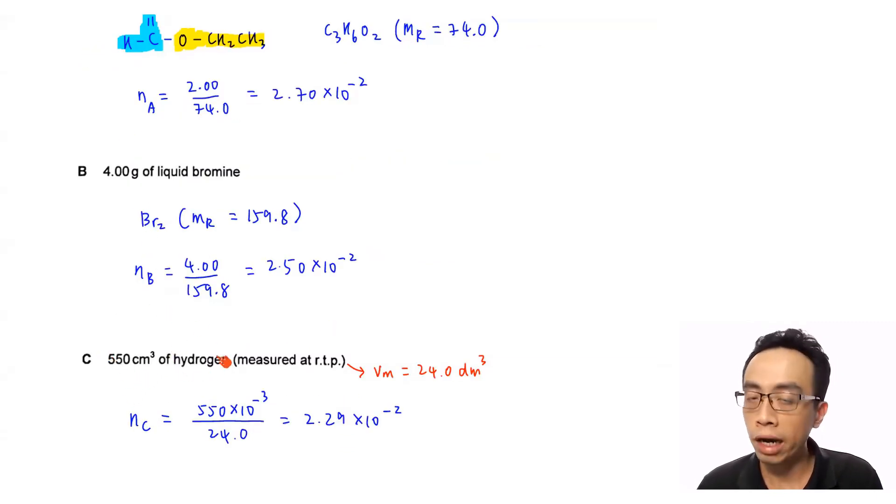Next, option C, 550 cm³ of hydrogen measured at RTP. Now, we do know that the molar volume is 24.0 dm³. Molar volume is the volume of 1 mole of any gas measured at room temperature and pressure. So given the volume 550 cm³ of hydrogen, we will be able to work out the number of moles. Number of moles for option C will be the volume 550 times 10⁻³ to convert to dm³ over 24.0, which is the molar volume. So the number of moles will work out to be 2.29 × 10⁻².